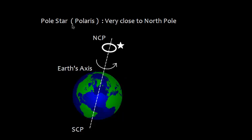Let us talk about Polestar or Polaris. This is very close to North Pole. Actually, this is a visible star approximately aligned with the earth's axis of rotation.